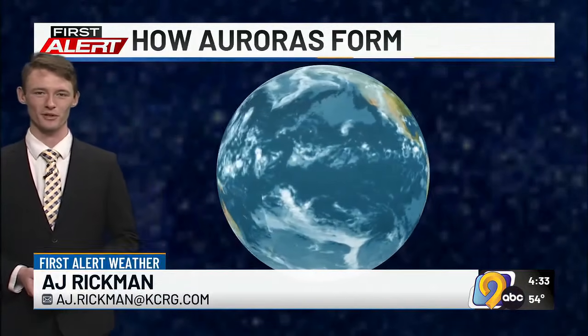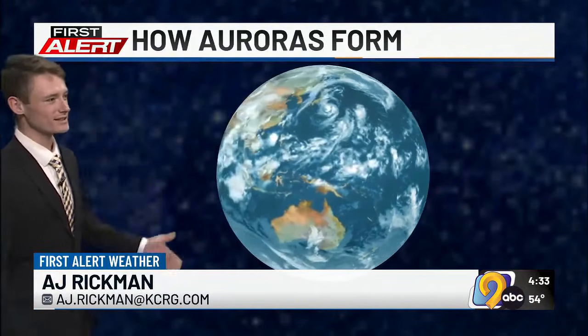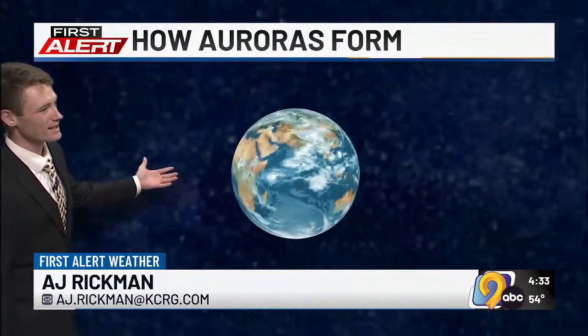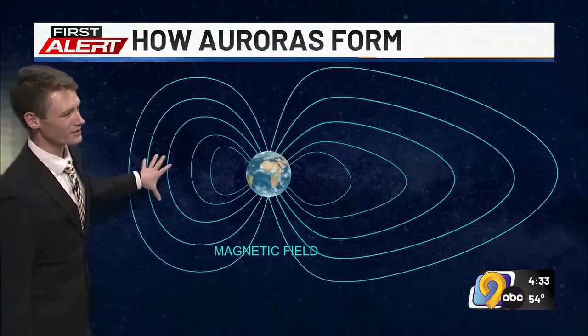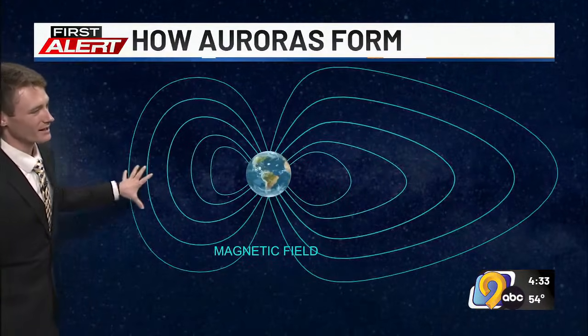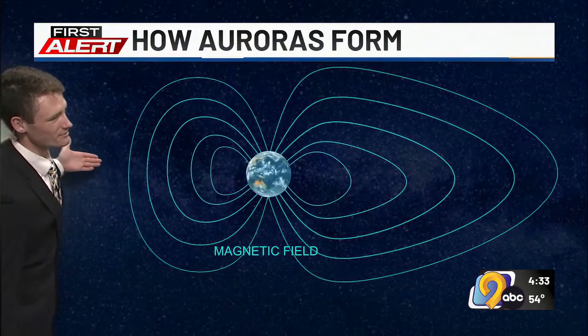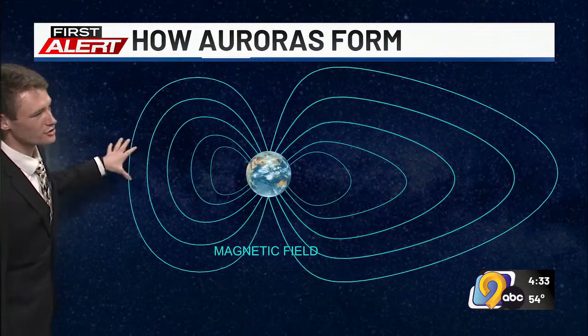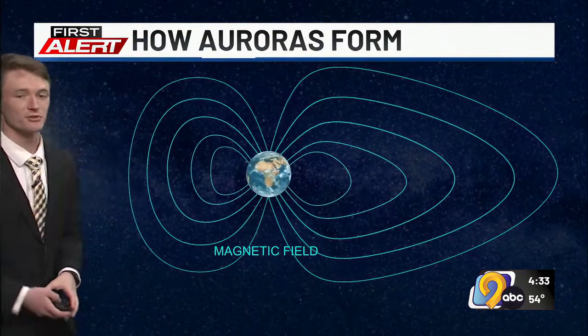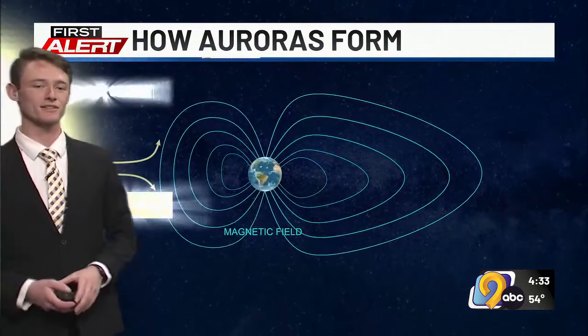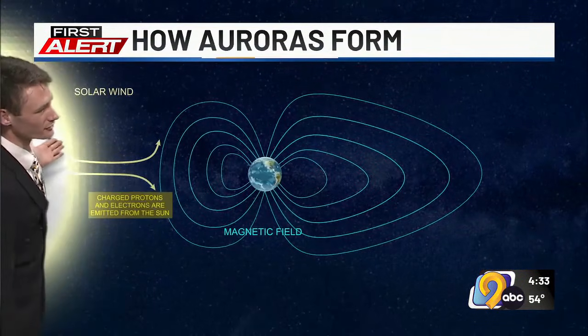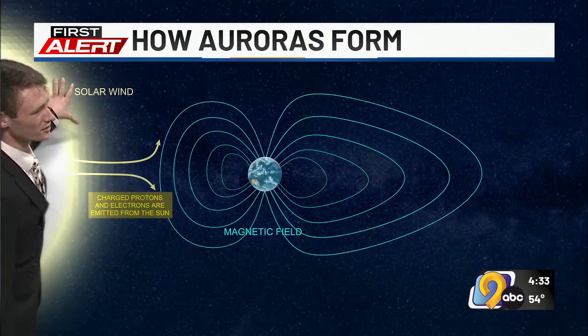Let's look at how auroras form. Earth, as it spins, creates a magnetic field, and that magnetic field protects us from getting direct impacts from a lot of charged particles — protons and electrons — that come from the Sun in what is